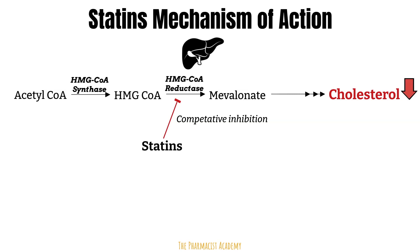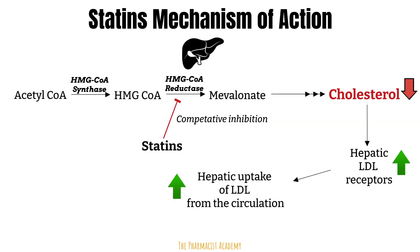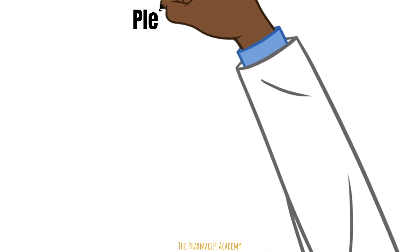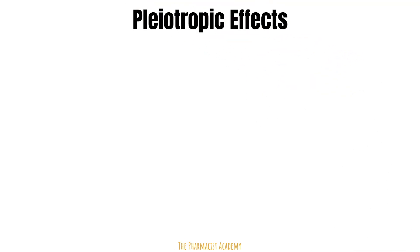By reducing hepatic cholesterol synthesis, an upregulation of hepatic LDL receptors occurs, leading to an increased hepatic uptake of LDL cholesterol to be broken down. Because there are a series of compounds impacted by the inhibition of HMG-CoA reductase before we get to the end product cholesterol, statins are known to have what we call pleiotropic effects, which simply means that they produce more than one effect.